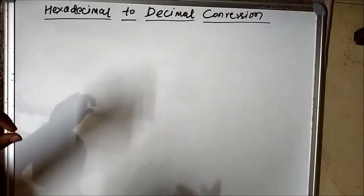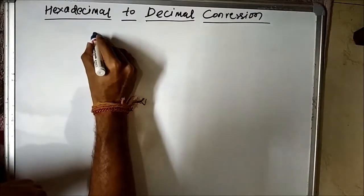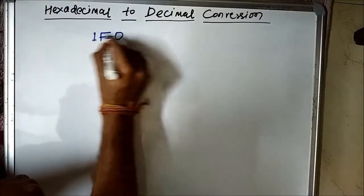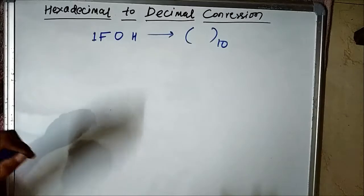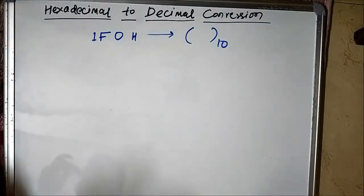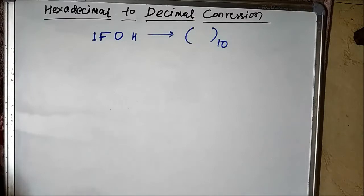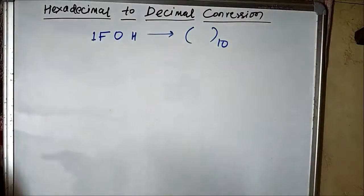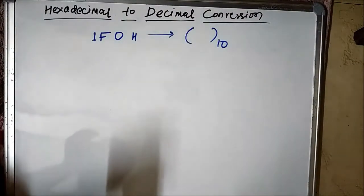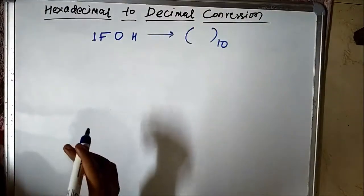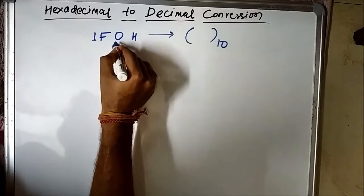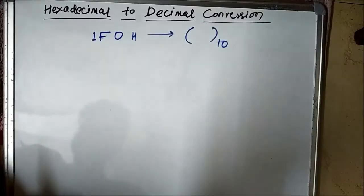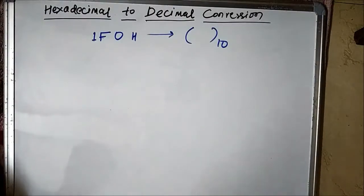Let us consider another hexadecimal number and convert it to decimal form. Let us take 1F0h. Here, F means 15 — hexadecimal is an alphanumeric code, and F stands for 15. I have discussed the basic concepts of the hexadecimal number system in a separate video, so please check that out.